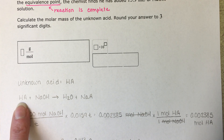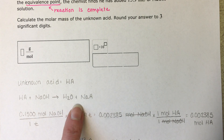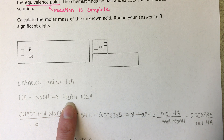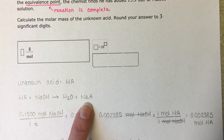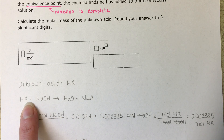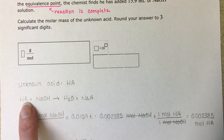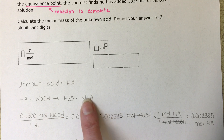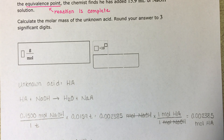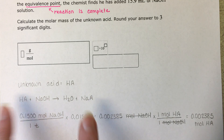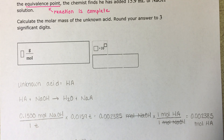The unknown acid, H-A, is going to react with sodium hydroxide in an acid-base neutralization reaction, which we've seen in Chapter 4, producing water and some ionic compound. We don't know what the ionic compound is because we don't know what A represents, but whatever A is, it's going to end up paired with the sodium ion from sodium hydroxide. It turns out we don't need to know what A actually is in order to solve the problem.